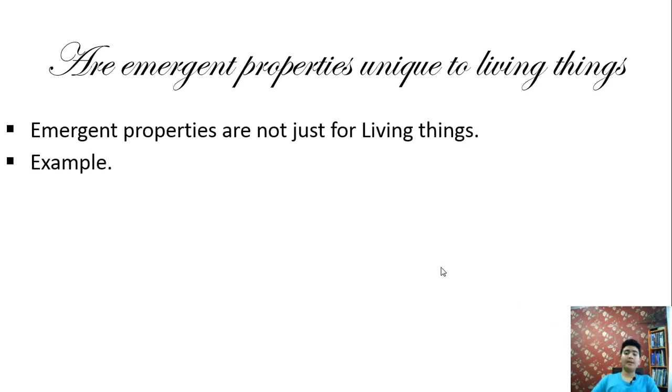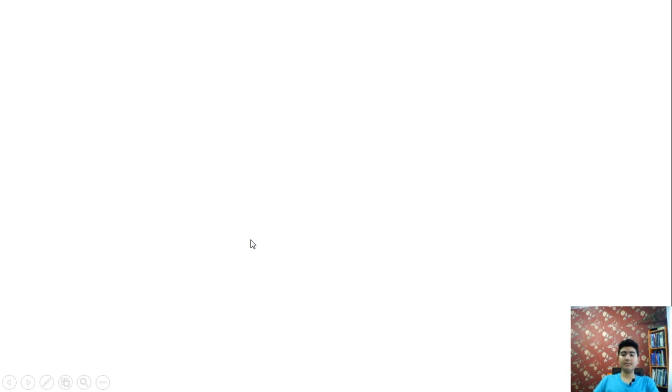Now let's talk about what systems biology means. To fully explore emergent properties, biologists complement reductionism with systems biology. In more detail, systems biology means the exploration of biological systems by analyzing the interactions among its parts.